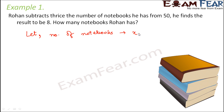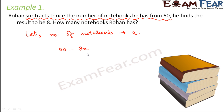Now let us establish the expression based on the condition given in the question. The condition is that Rohan subtracts thrice the number of notebooks he has from 50. So he is subtracting thrice the number of notebooks, that is 3x, from 50. When he subtracts 3x from 50 the result he gets is 8. So basically 50 minus 3x is equal to 8. This is our equation.